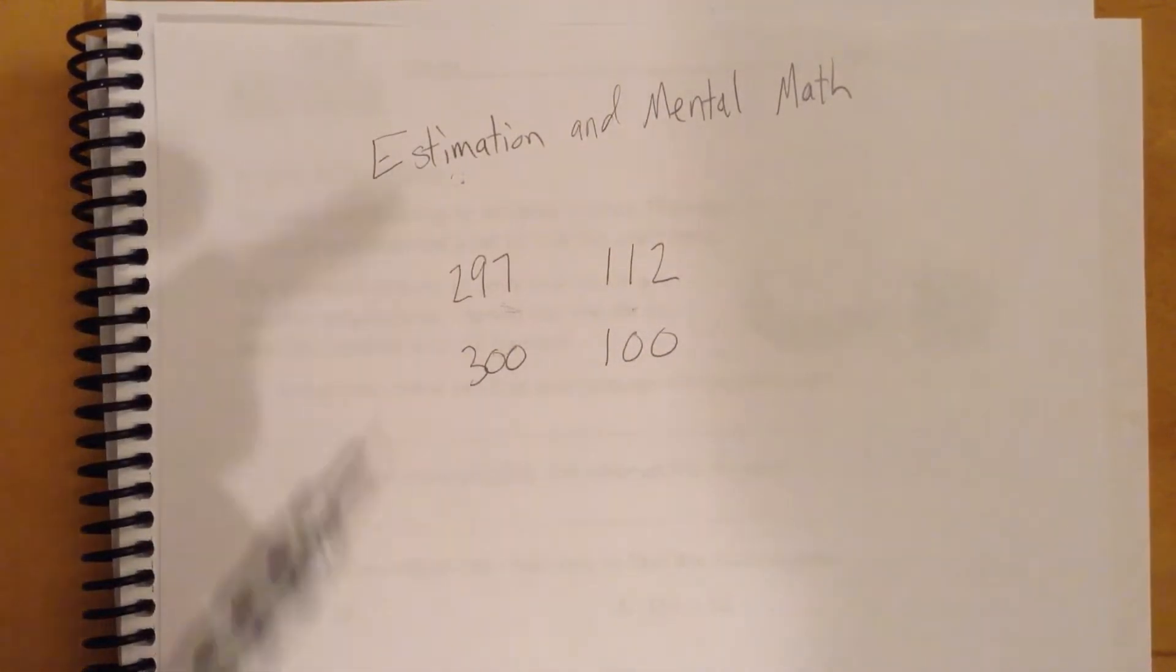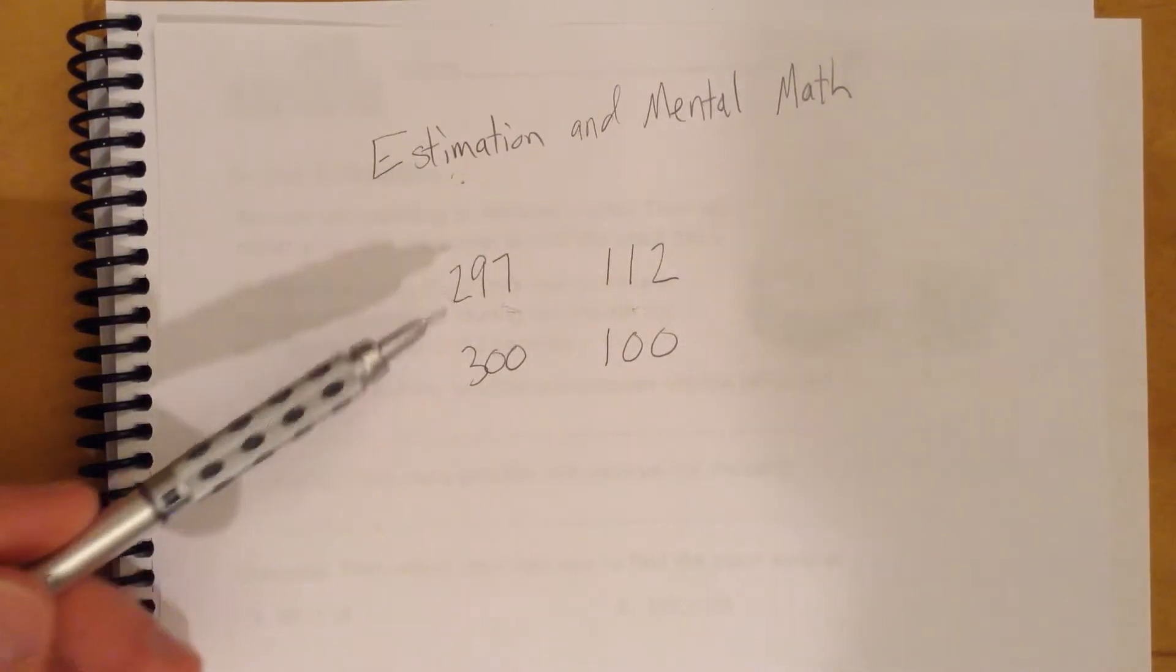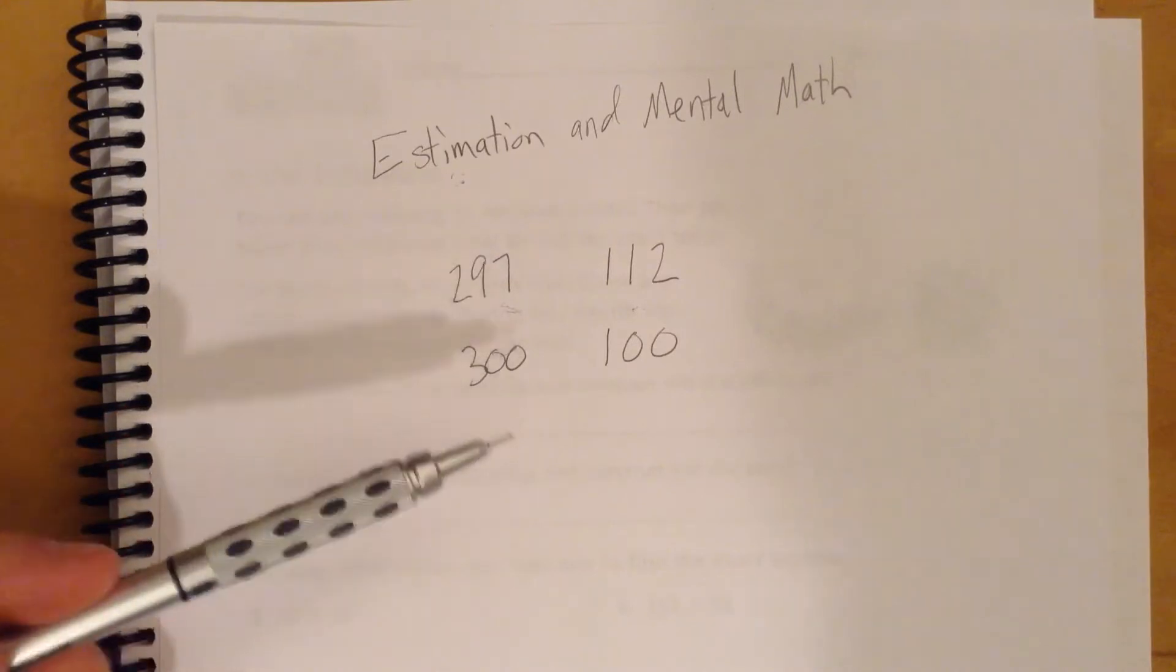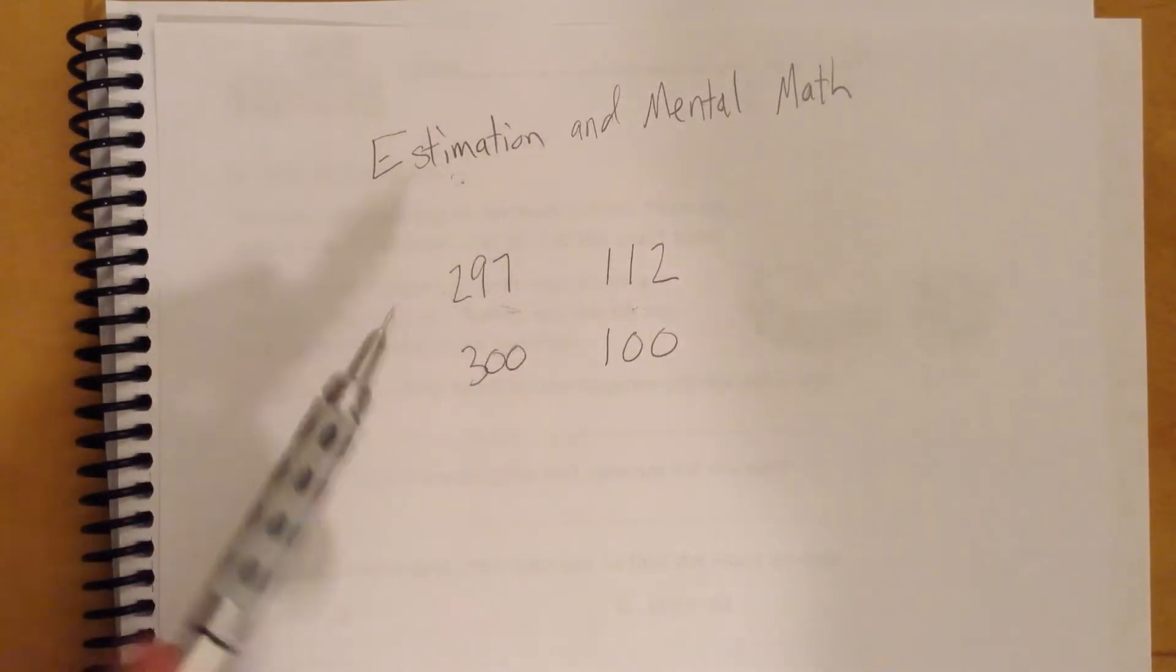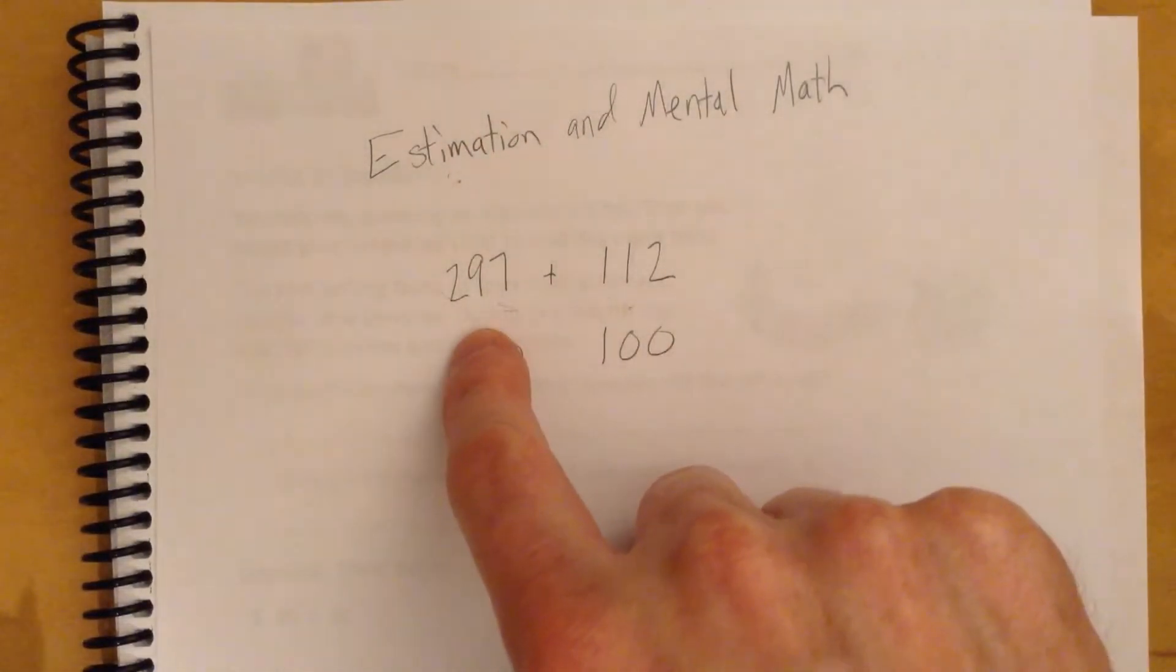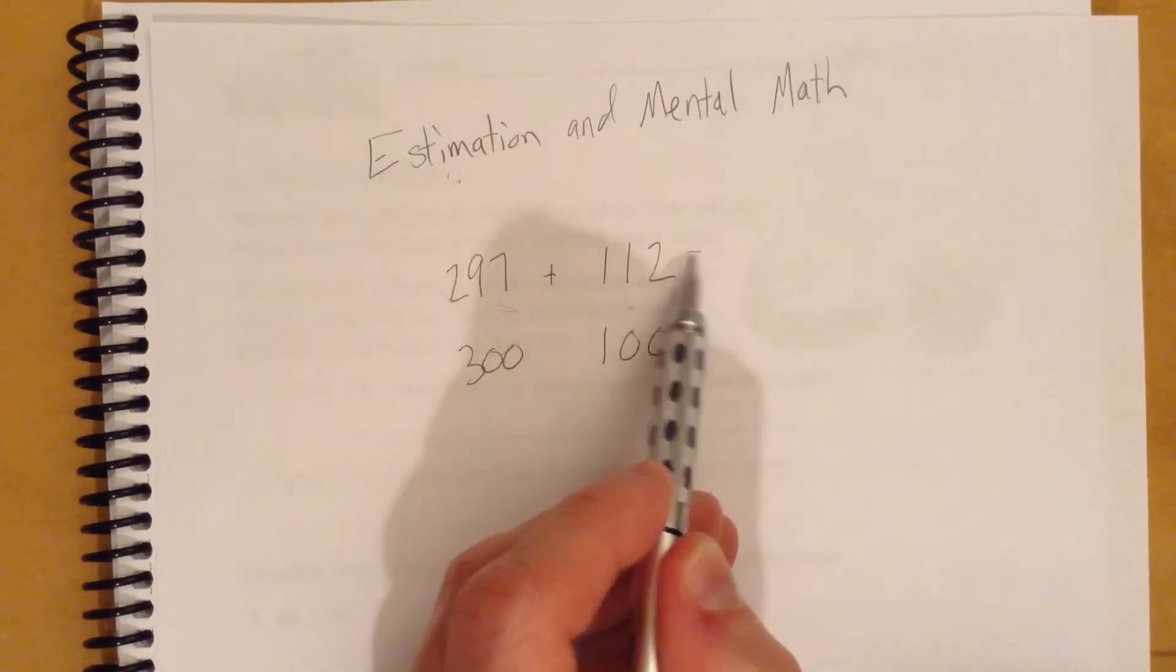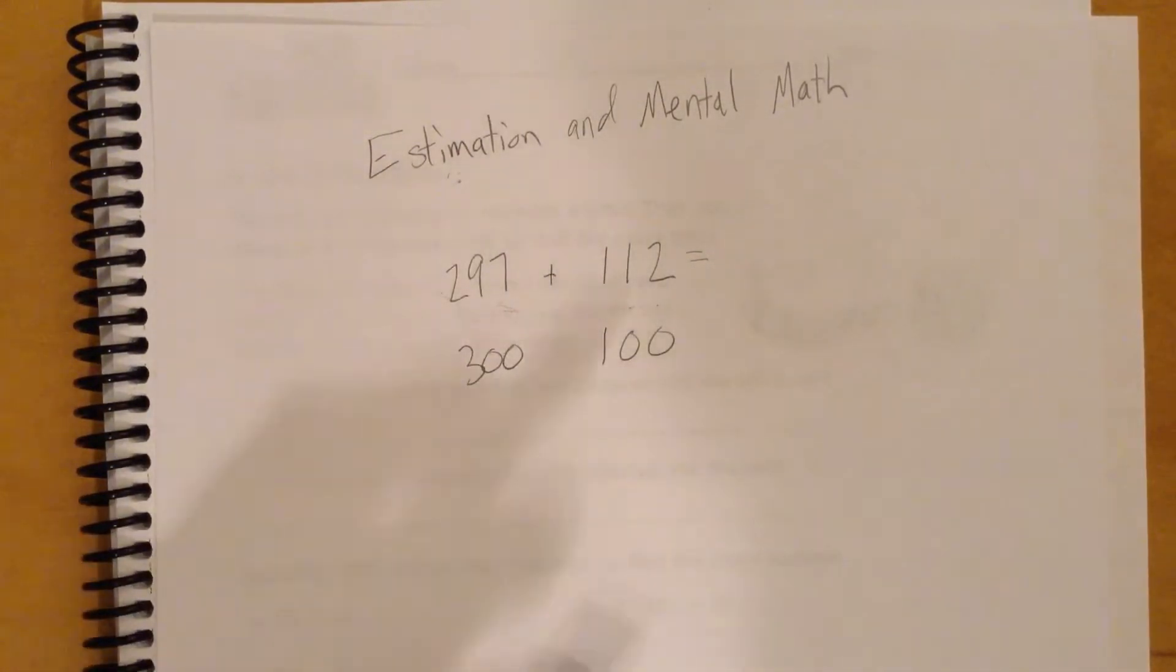So hopefully that makes sense. And we'd be able to do this in our head, right? Because this is really only adding 3, and this is only taking away 12. So if we had to estimate the answer for 297 plus 112, we know that it's going to be about 400, okay?